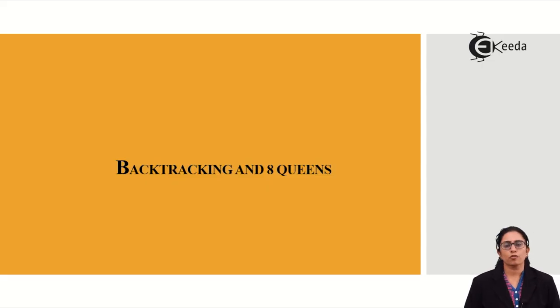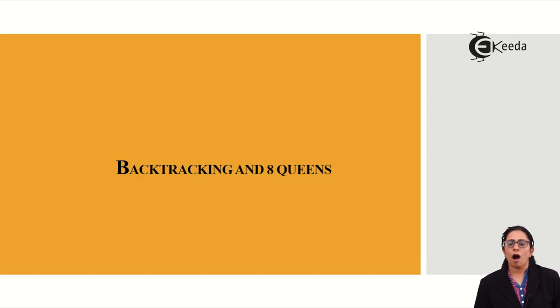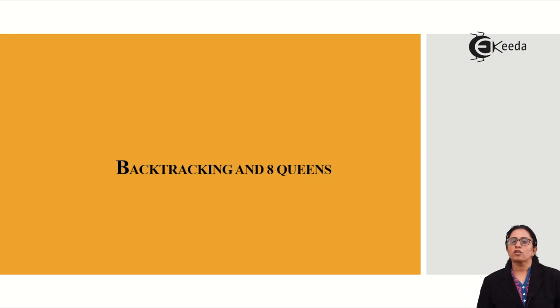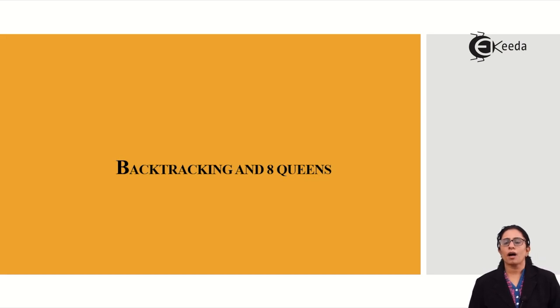Hello friends, today we will see how eight queens can be placed on a chessboard using the algorithm and data structures of backtracking.